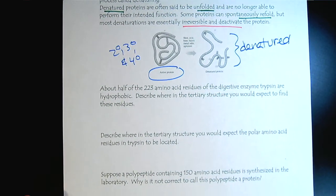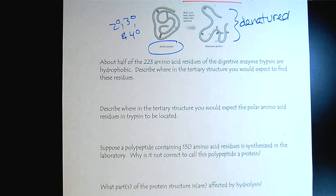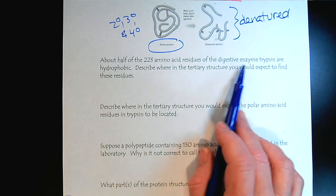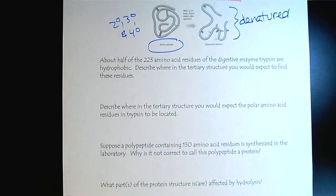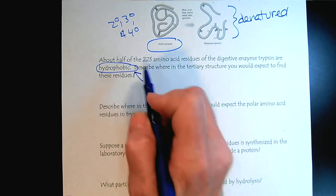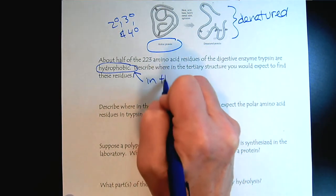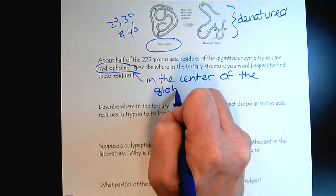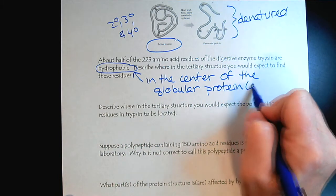Now let's have a few wrap-up questions to see how well you're understanding protein structure and the idea of denaturation. About half of the 223 amino acids that we find in the digestive enzyme trypsin are hydrophobic. Where would we find those? If they're hydrophobic, we're going to find them on the inside of the globule, in the center of the globular protein. Remembering that globular proteins are often enzymes.